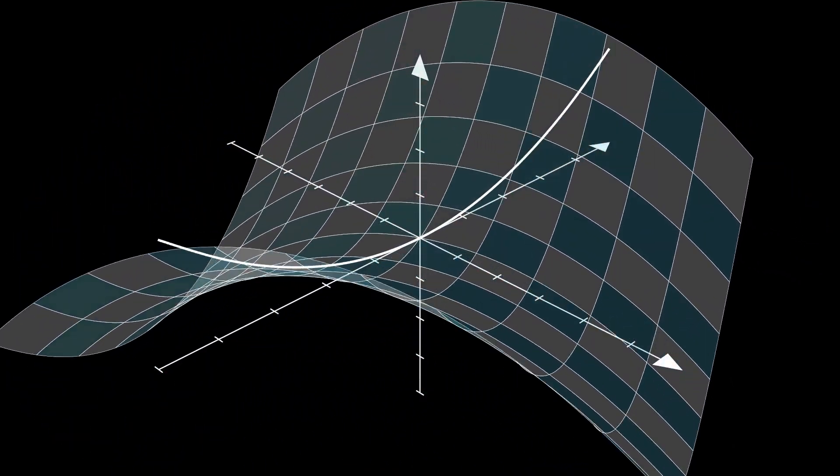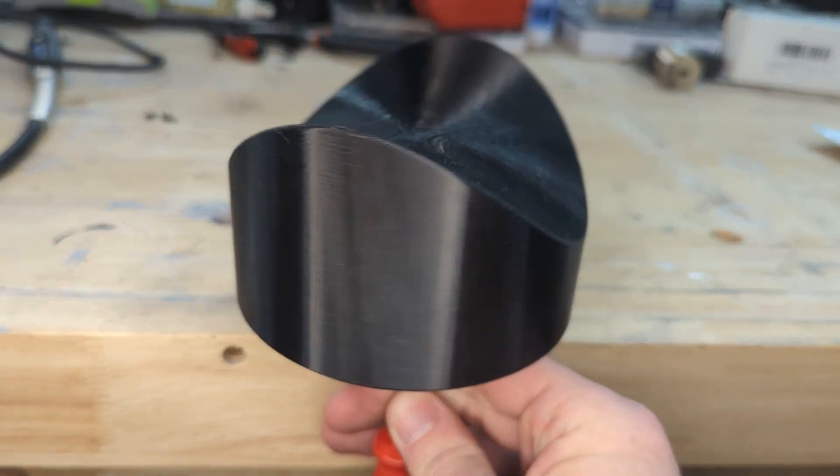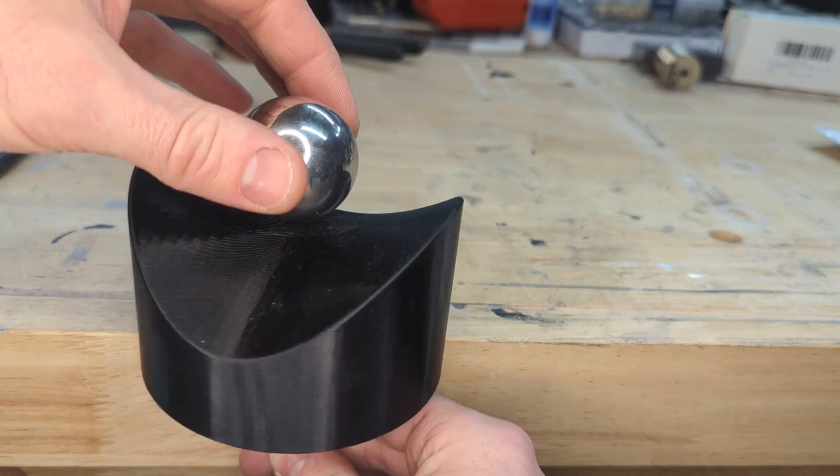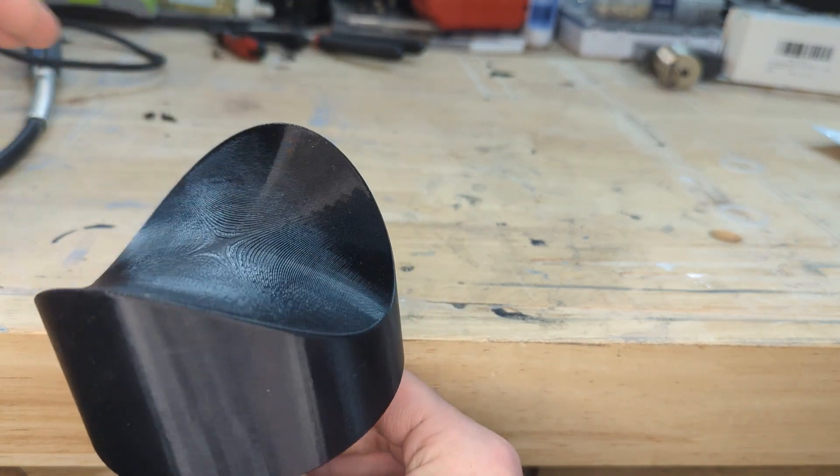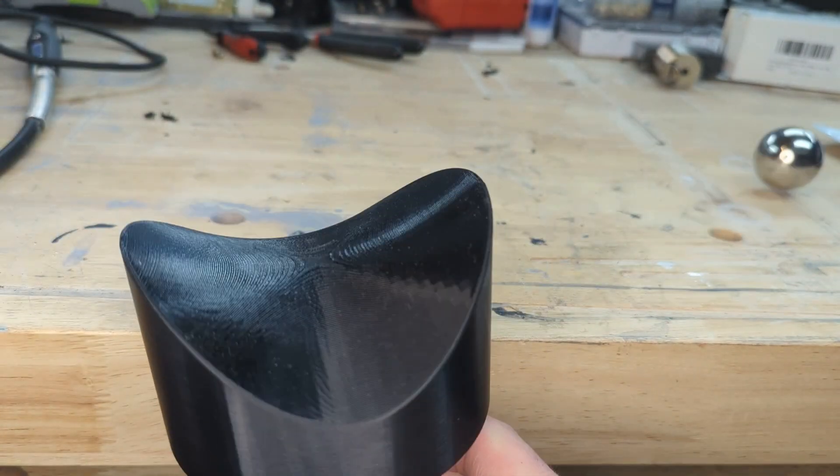The next question that comes up is how fast should it spin? If the saddle spins too slowly, the ball will fall off because the force that attracts the ball to the center won't come around fast enough to act on the ball. But at the other end of the spectrum, if it spins too quickly, it's likely to throw balls across the room. So there's probably a happy medium.